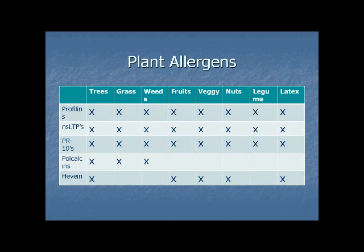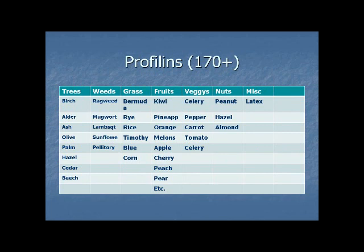Hevein, from latex, is also present in fruits, veggies, nuts, and of course latex — that's why we see the latex-fruit syndrome. Hevein is a carbohydrate-binding molecule. There are over 170 profilins. If you're sensitized to one, you're probably going to have a lot of positive tests and you don't know what they all mean. Parvalbumins are found in fish and amphibians with a lot of cross-reactivity across all fish. Tropomyosins from shrimp, parasites, insects. Albumins from dog, cat, cow, and pig. Probably more important than the albumins are the lipocalins from dog, cat, horse, and even milk — beta-lactoglobulin is a lipocalin.